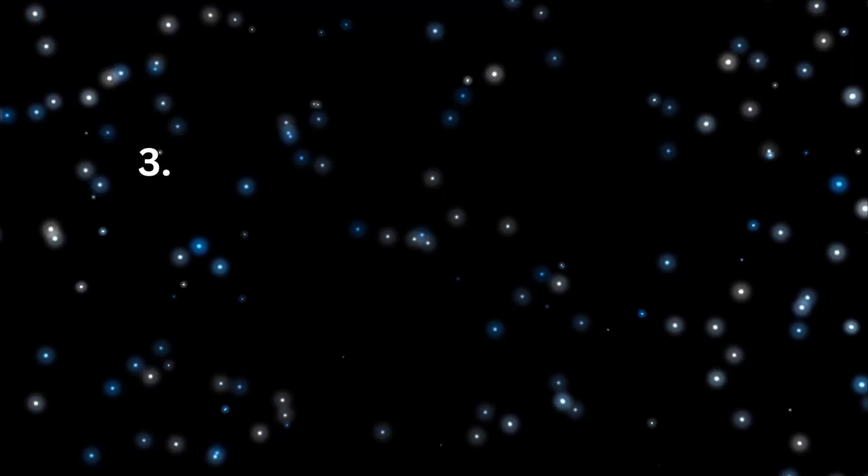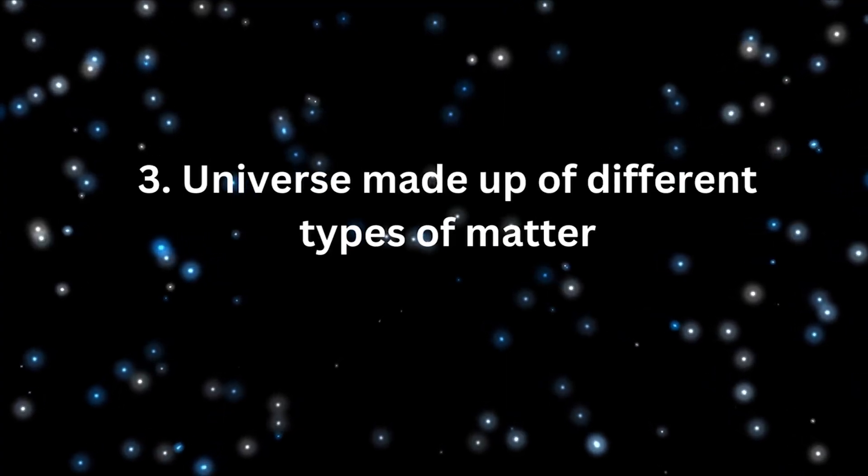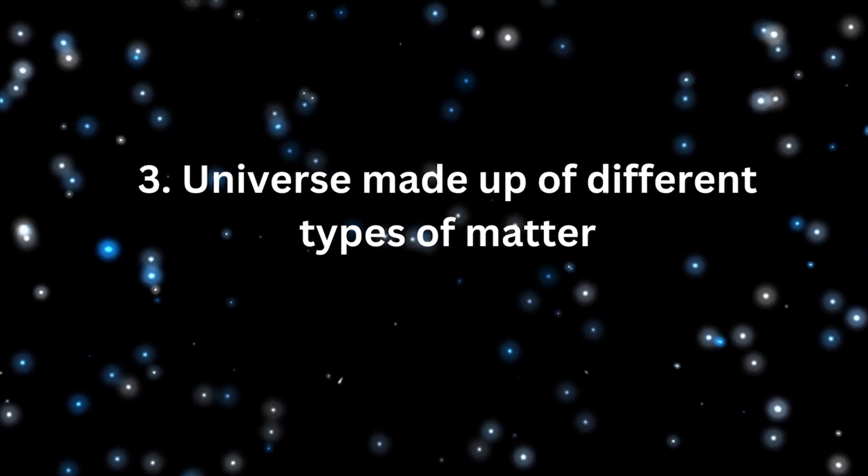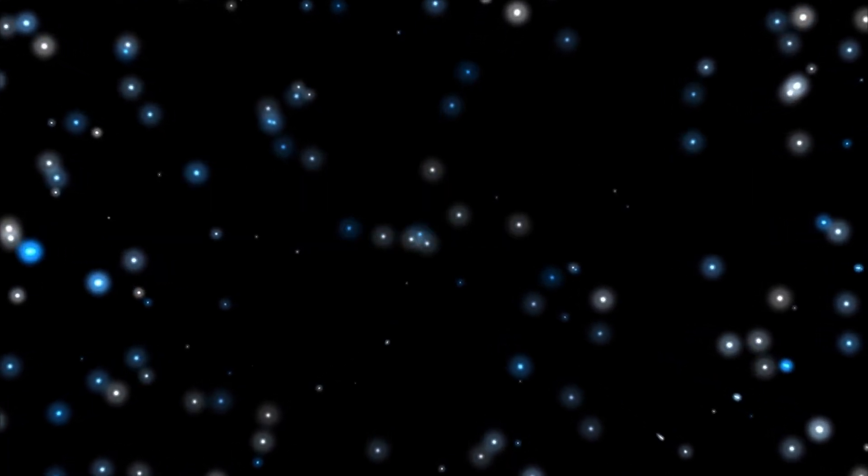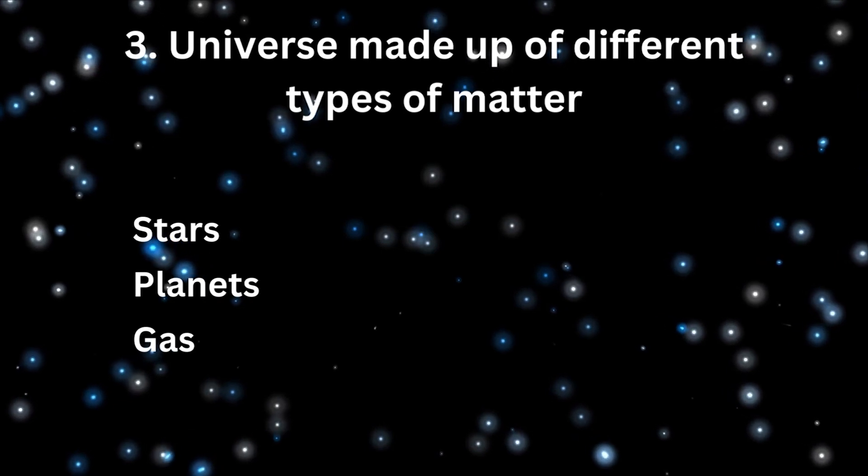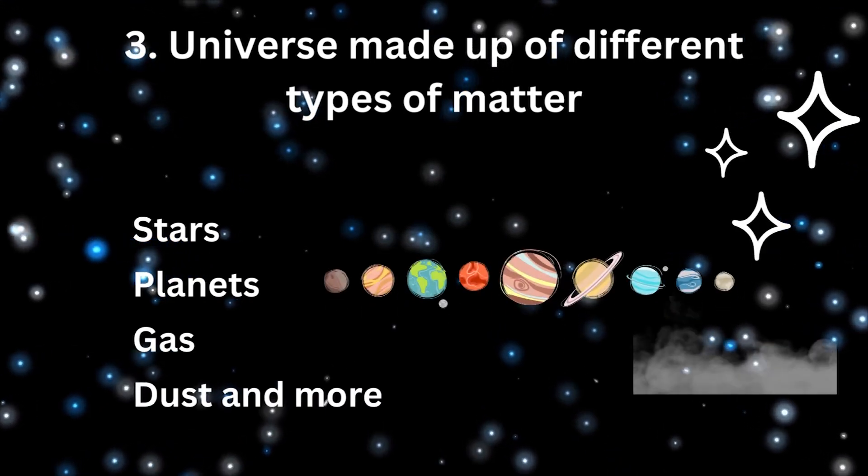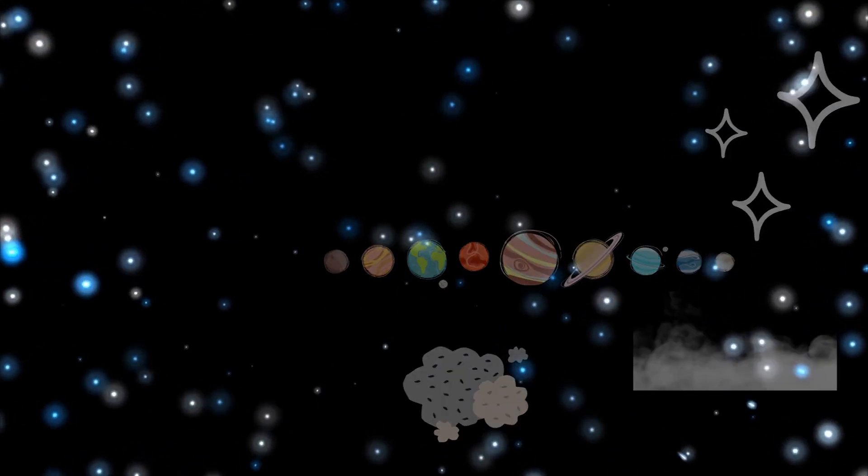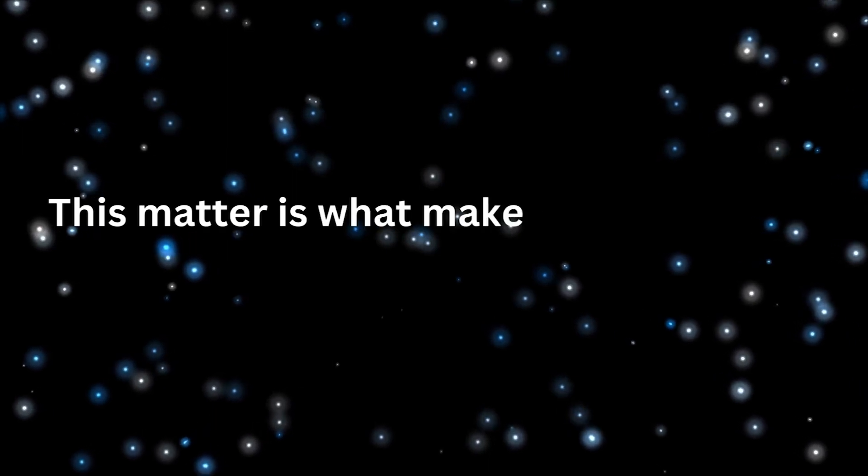Our Universe is made up of different types of matter. It is full of different types of matter including stars, planets, gas, dust and more. This matter is what makes up everything we see in the Universe.